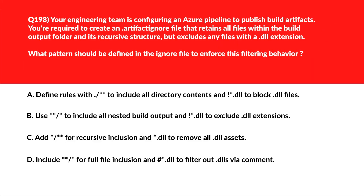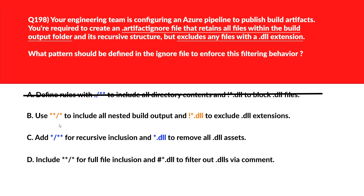This question tests concepts on coding patterns. Option A uses `./***` — this is not a valid pattern and may not match all listed files, so it's incorrect. Option B uses `**/` to include all listed build output, and `!*.dll` to exclude .dll extensions. The pattern `**/` includes all files recursively, and `!*.dll` excludes .dll files from being published as artifacts.